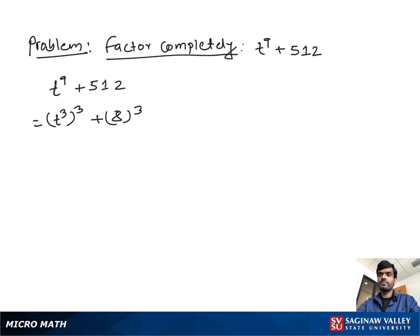So you can write a³ + b³ is equal to (a + b) times (a² - ab + b²). If we suppose t³ as a and 8 as b, you can write (t³ + 8) times (t^6 - 8t³ + 64). If we focus on this one, it still can be factored.